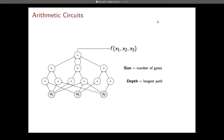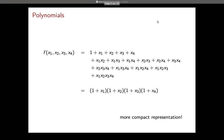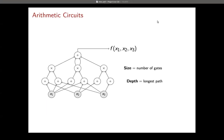There are two parameters of interest in formulas or circuits. An arithmetic circuit is a generalization of a formula: instead of having an underlying graph which is a tree, we have a directed acyclic graph, also called a straight-line program. The two parameters of interest are the size — the number of arithmetic operations needed to compute the polynomial — and the depth, which is the longest path from a leaf to the root.